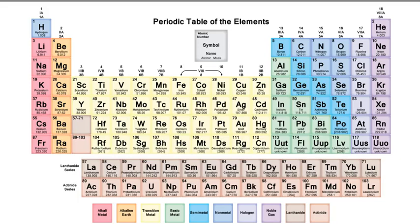Hey, Chemistry. Mrs. KJ here going over 3.06 transition metals. Today we're just going to talk a little bit about what I like to call the messy middle transition metals, and we're also going to talk about the inner transition metals.